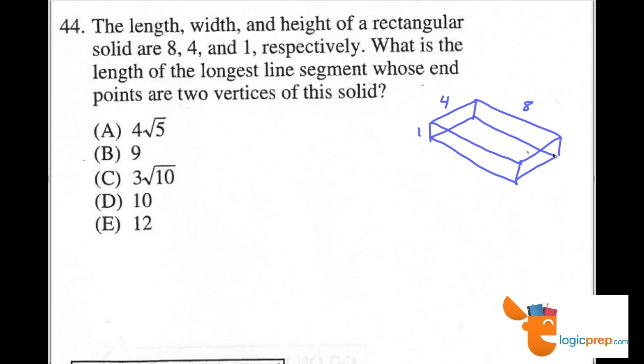They want to know what is the length of the longest line segment whose endpoints are two vertices of this solid. So the two furthest points on a rectangular prism are what is known as the diagonal, the opposite corners going through the whole shape here.